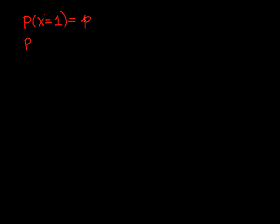To distinguish that from the P I have on the other side, I'll use a script P. The probability that X equals 0 is 1 minus P. So P is some number between 0 and 1.